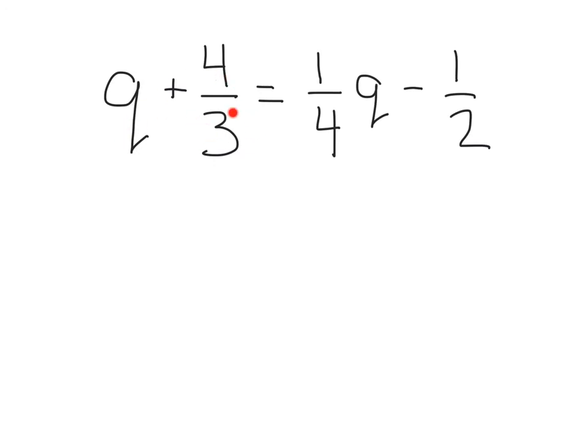Here we've got q plus 4/3 equals (1/4)q minus 1/2. First, what's our common denominator? What's the least common multiple of all these guys down here? We've got 3, 4, and 2. Alright, well, 8 is going to work for 4 and 2, but not 3. What about 12? Alright, 3 can go into 12, 4 can go into 12, and 2 can go into 12. So let's go ahead and multiply each side of the equation by 12.